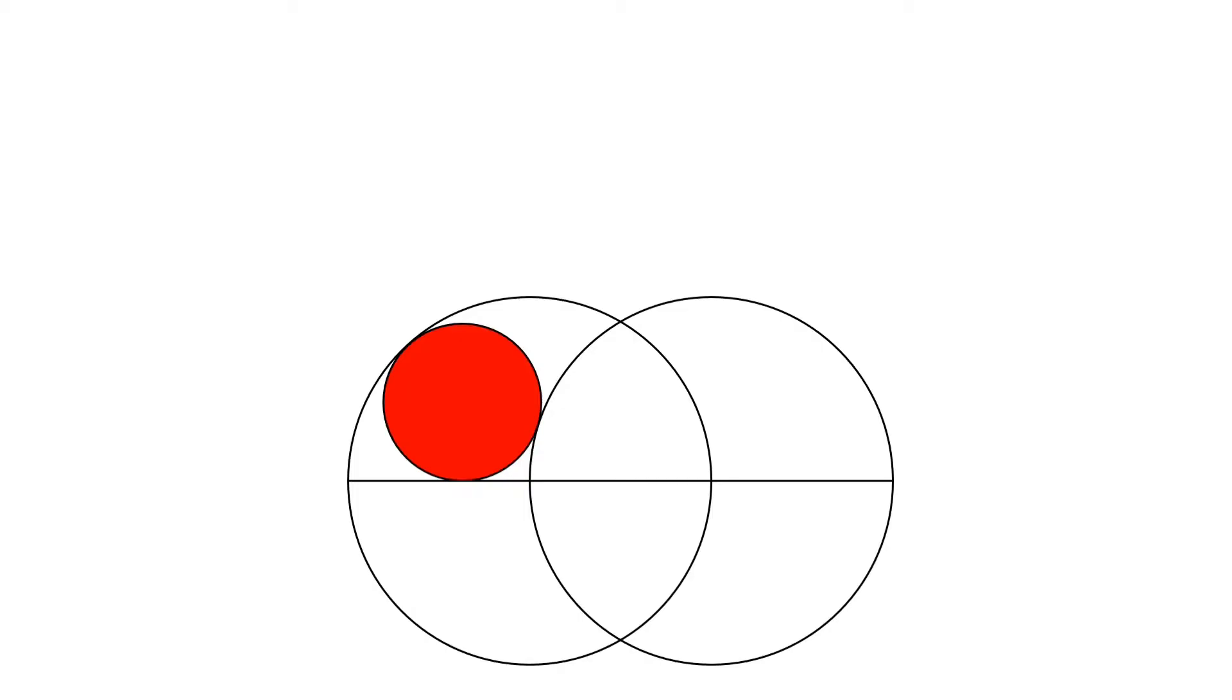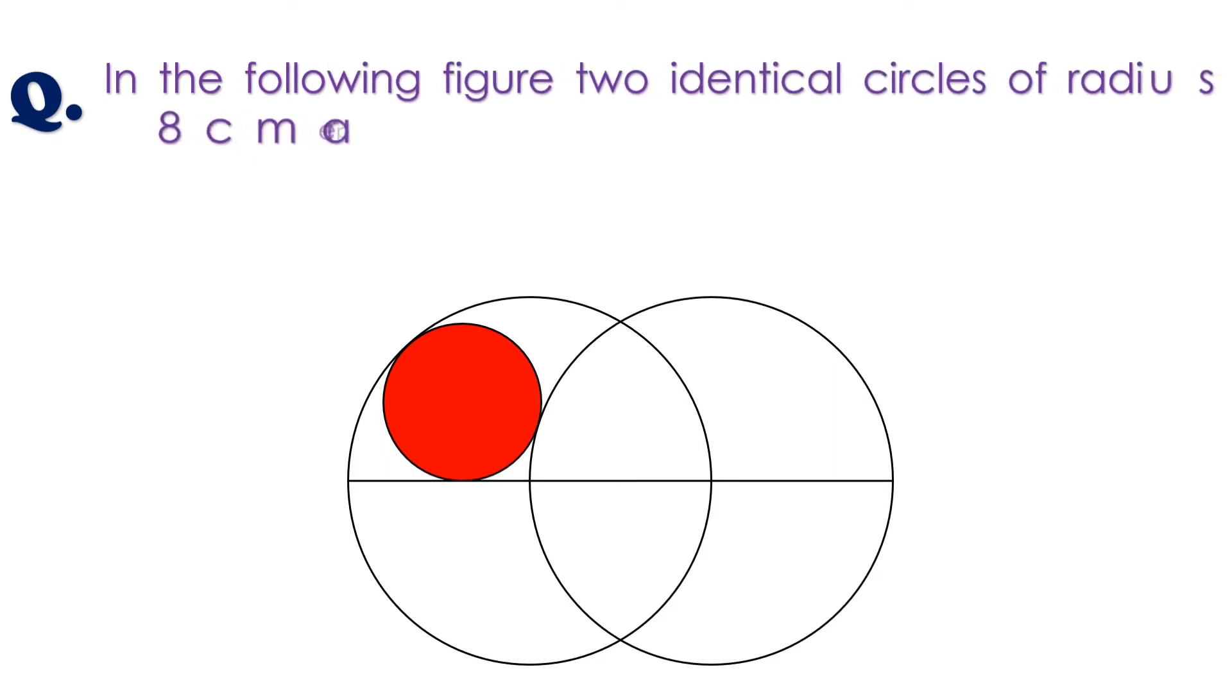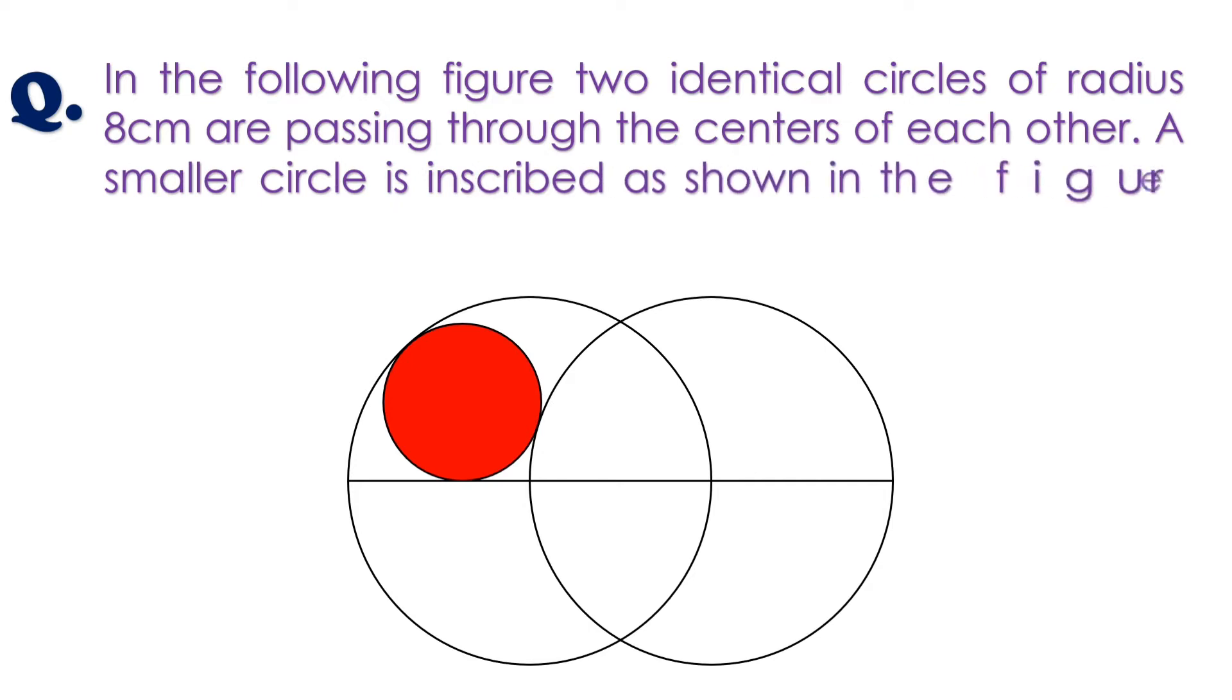Here is our previous question. In the following figure, two identical circles of radius 8 cm are passing through the centers of each other. A smaller circle is inscribed as shown in the figure. Find the area of the red circle.